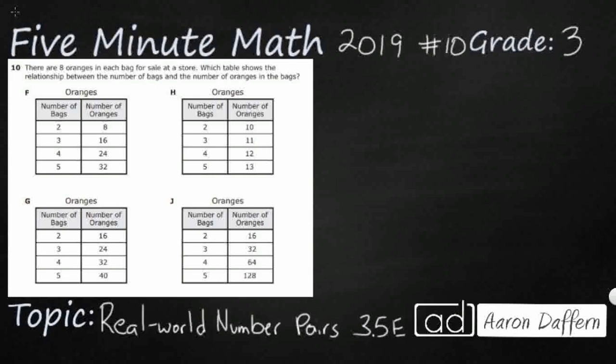So it looks like we've got eight oranges in each bag. So that's going to be our only clue there. Which table shows the relationship between the number of bags and the number of oranges. So eight oranges in each bag. So let's see if we can figure this out ourselves.